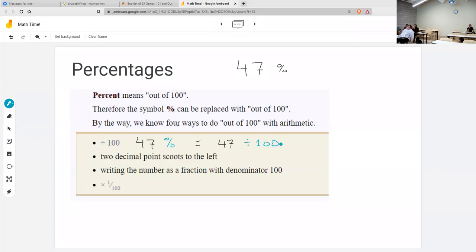Great. That's one thing we can do. It's also true that two decimal point scoots to the left is a shortcut for divided by 100. If you just took a whole bunch of numbers with your calculator and did divide it by 100 to all of them, you would notice a pattern. It's two decimal point scoots to the left. So I could take that percent symbol and replace it by 47 with two decimal point scoots to the left.